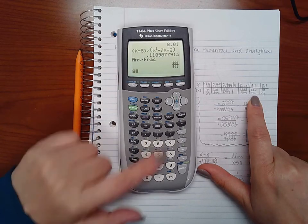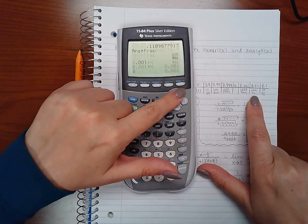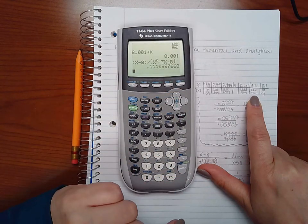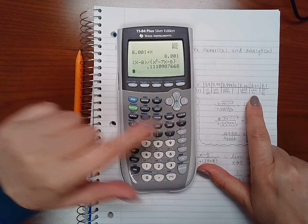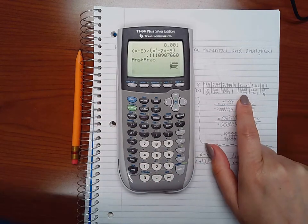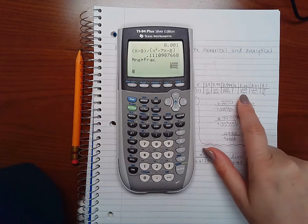Now I'm going to do 8.001, store x, go up, hit enter, copy it, hit enter to plug it in, then math 1 to change it to a fraction and I get 1000 over 9001.